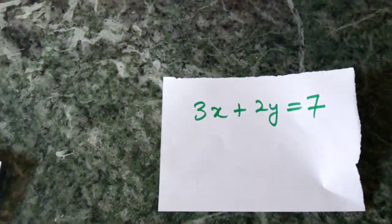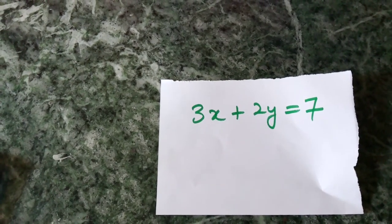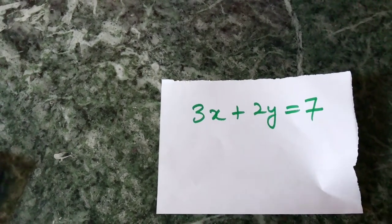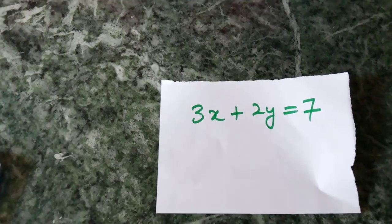Example 3: 3x plus 2y equals 7. It is a linear equation in two variables because it is in the form ax plus by plus c equals zero.